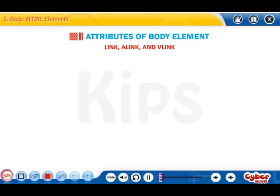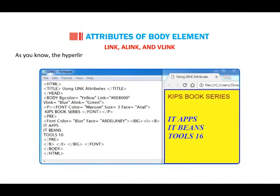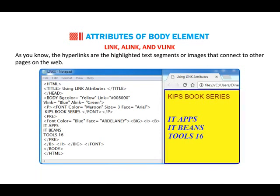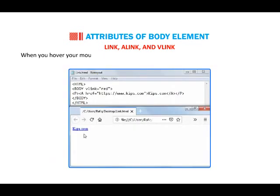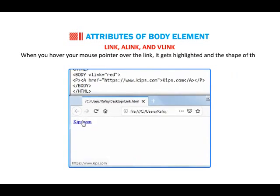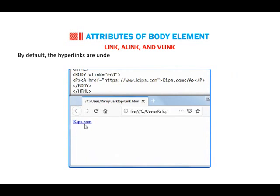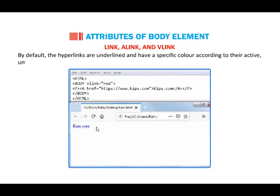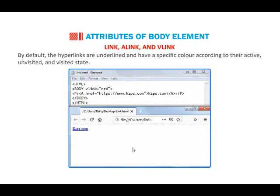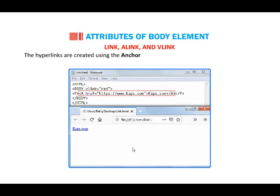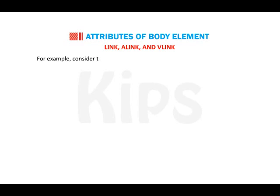A-Link and V-Link. As you know, hyperlinks are highlighted text segments or images that connect to other pages on the web. When you hover your mouse pointer over a link, it gets highlighted and the shape of the pointer changes. By default, hyperlinks are underlined and have a specific color according to their active, unvisited, and visited state. Hyperlinks are created using the anchor tag with href attributes specifying the path of the document to be linked. For example, consider the following code to create a hyperlink on a web page.